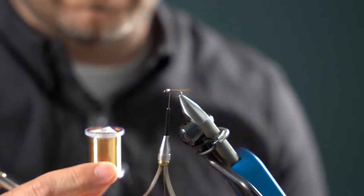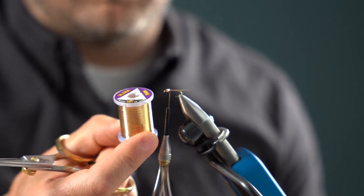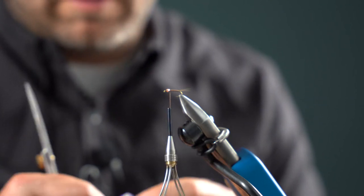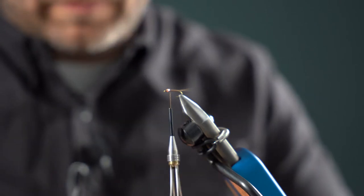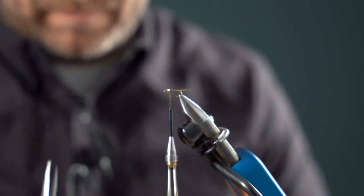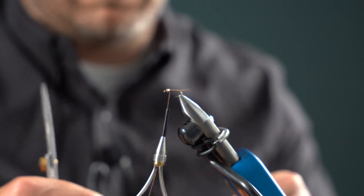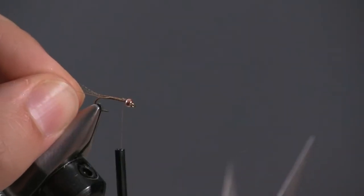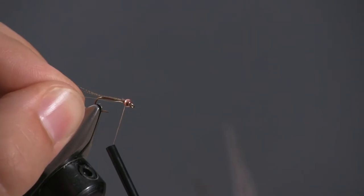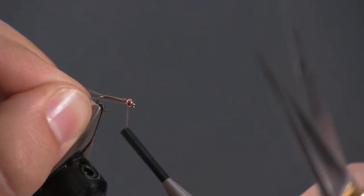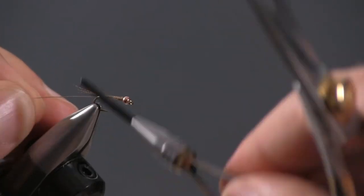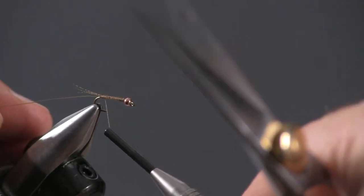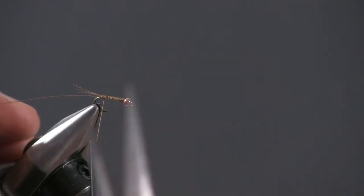We're going to rib this with some ultra wire gold. This is a small size. And so we'll take a little length of ultra wire gold off the spool. And I want this underbody to stay smooth. And so what I do is I'll advance this thread back to the bead. I tuck that little tip of the wire inside the bead and I tie in from there. It's a little tip that helps to keep that underbody nice and smooth. And I take that thread back to the tie-in point of the tail right there at that barb.